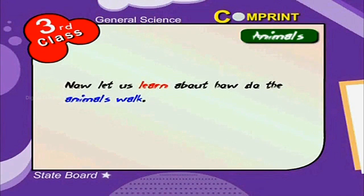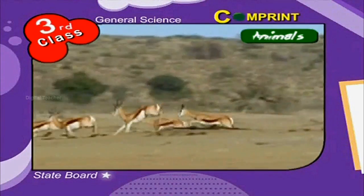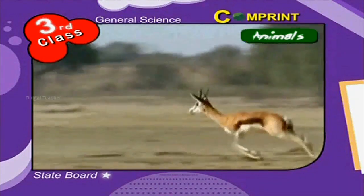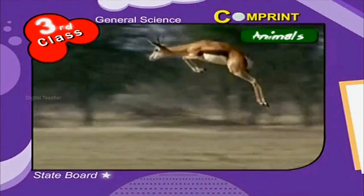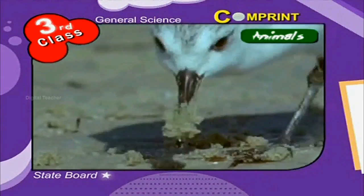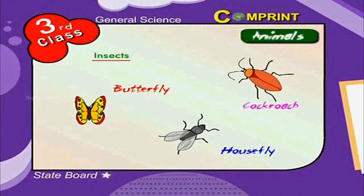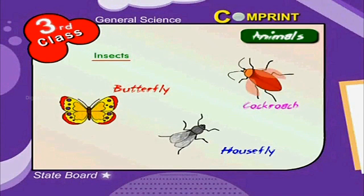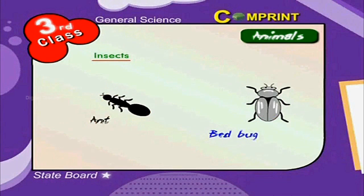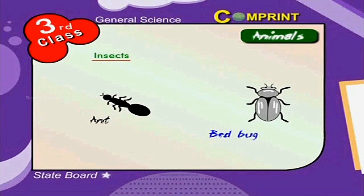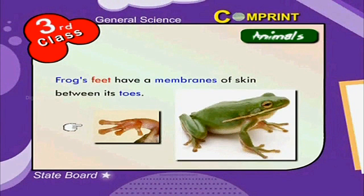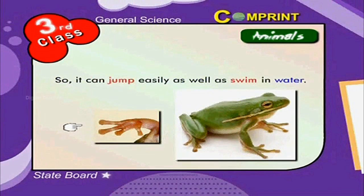Now let us learn about how animals walk. Generally, animals have four legs. Birds have two legs to walk and two wings to fly in the air. Some insects like horse fly, butterfly and cockroach have six legs and wings to fly. Some insects like the ant and bed bug don't have wings. Frog's feet have membranes of skin between its toes, so it can jump easily as well as swim in water.